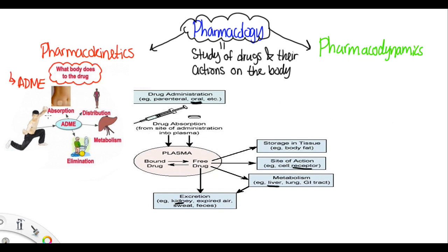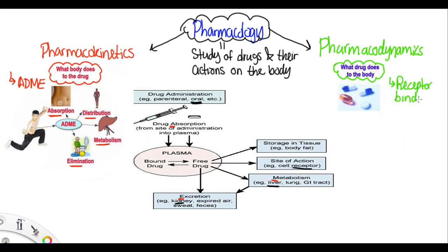Pharmacokinetics involves absorption, distribution, metabolism, and elimination. On the other hand, pharmacodynamics involves receptor binding, drug potency, drug efficacy, and toxicity.